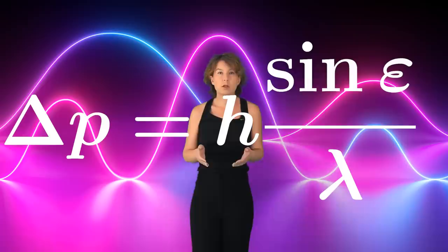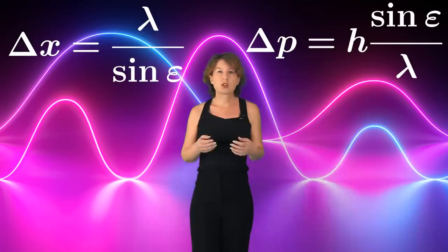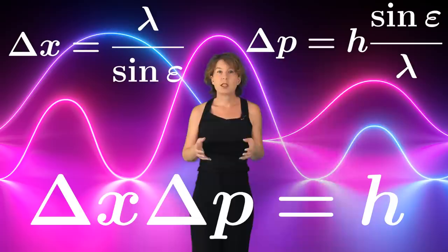Heisenberg estimated that the momentum that would be transferred from the photon to the electron is proportional to the energy of the photon, which means it is inversely proportional to the wavelength, and it is proportional to the sine of the opening angle. So if we call that momentum delta p, we have delta p is proportional to sine epsilon over lambda. And the constant in front of this is Planck's constant, because that gives you the relation between the energy and the wavelength of the photon. Now you can see that if you multiply the two uncertainties, the one in position and the one in momentum of the electron, you find that it's just Planck's constant. This is Heisenberg's famous uncertainty principle.